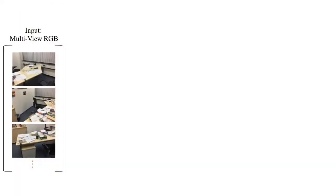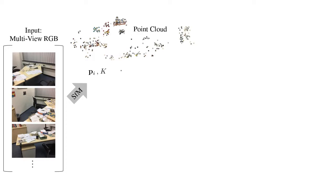Given a small set of images of a room, we run structure from motion to obtain camera parameters. At the same time, structure from motion produces a sparse reconstruction. Our idea is to use this freely available depth information to guide the NeRF optimization.